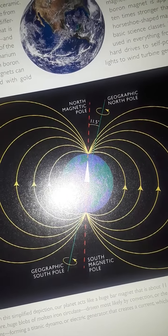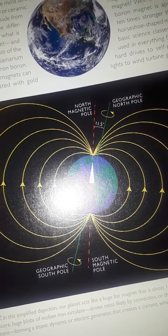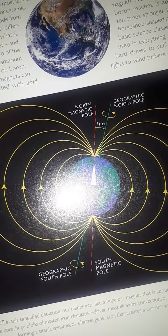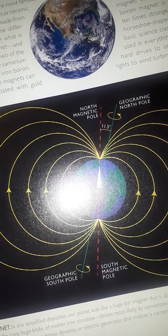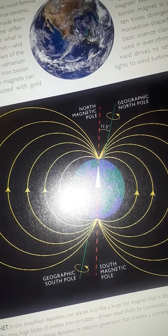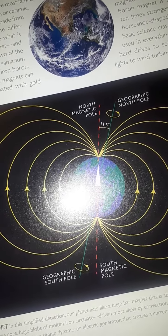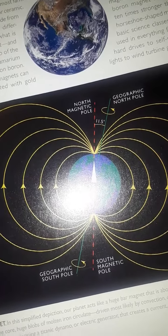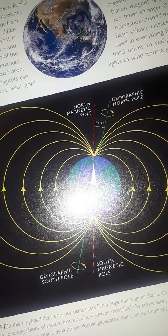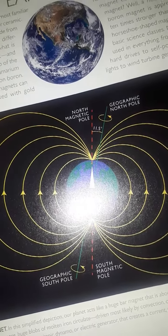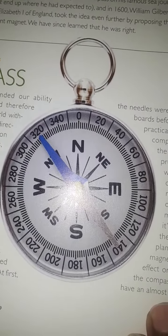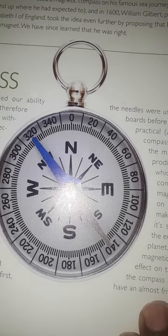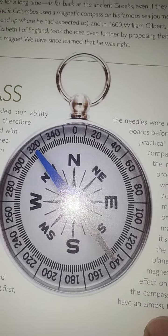The Earth is also like a magnet — it has a North Pole and a South Pole. The South Magnetic Pole corresponds to the Geographic South Pole, and the North Pole is the Magnetic North Pole. Even in a compass we can see North and South.